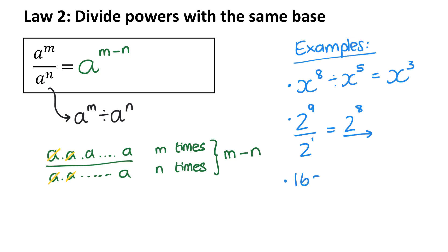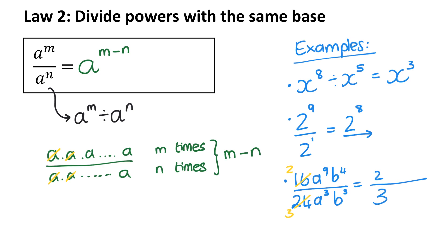Let's look at one with more going on: 24a to the power of 9, b to the power of 4, divided by 8a to the power of 3, b to the power of 3. Simplify the coefficients first — 8 goes into both, giving 2 over 3. Then for the variables: 9 minus 3 gives a to the power of 6, and b: 4 minus 3 gives b to the power of 1, so just b. You can also write that fraction as two-thirds a to the power of 6 times b. In summary, when you divide powers with the same base, you subtract the exponents.